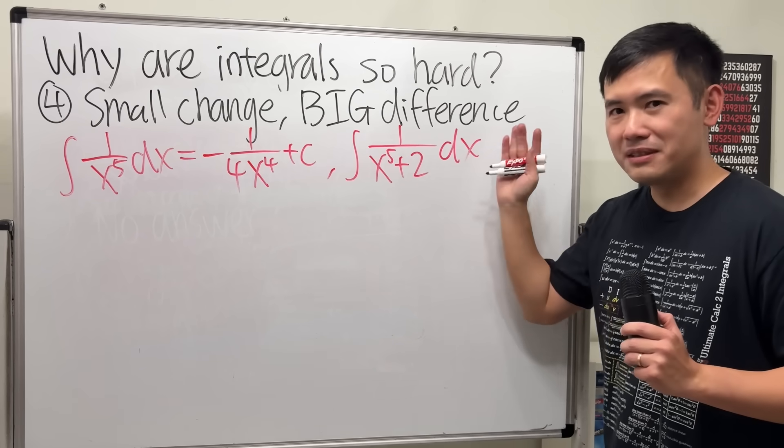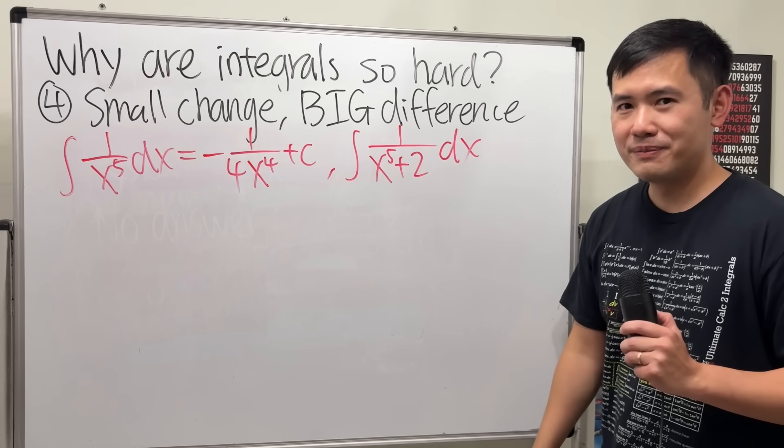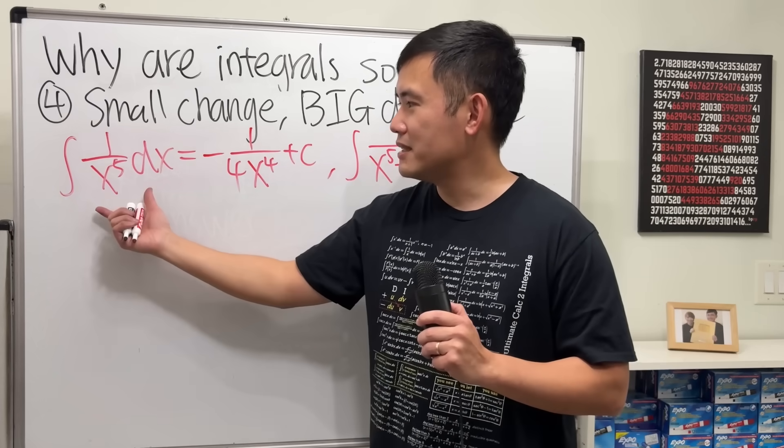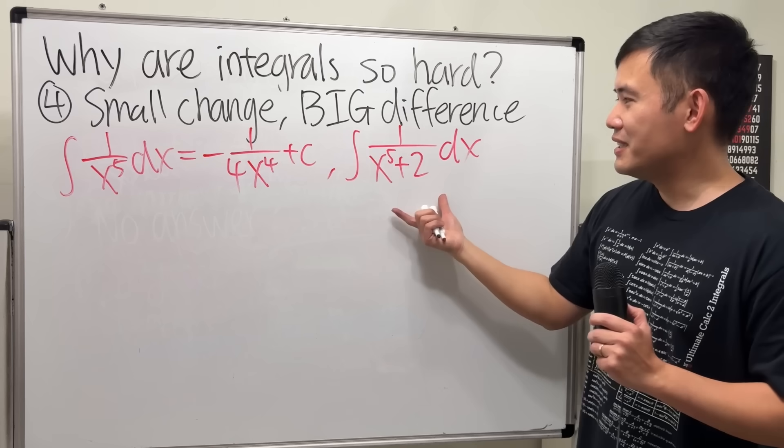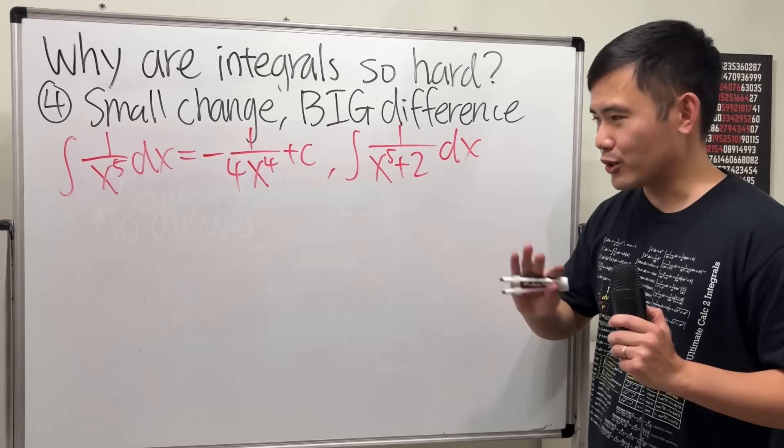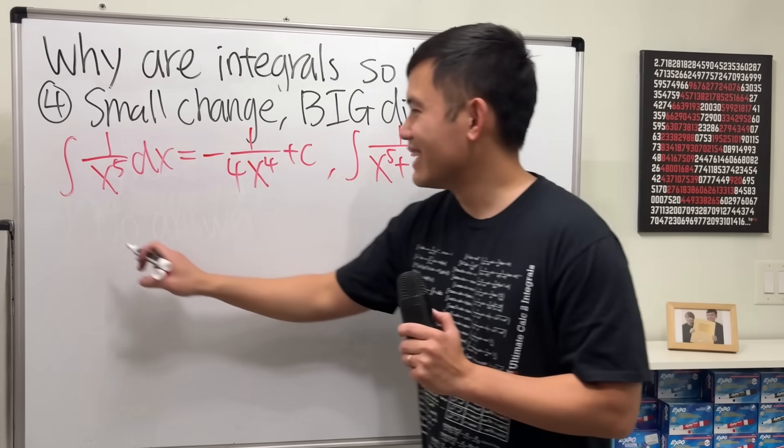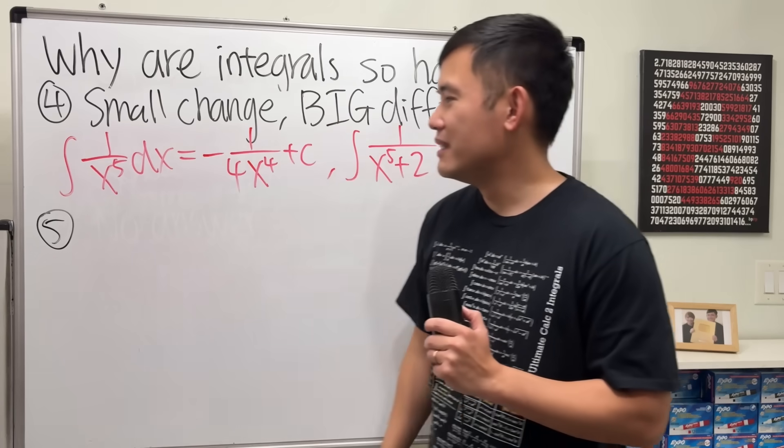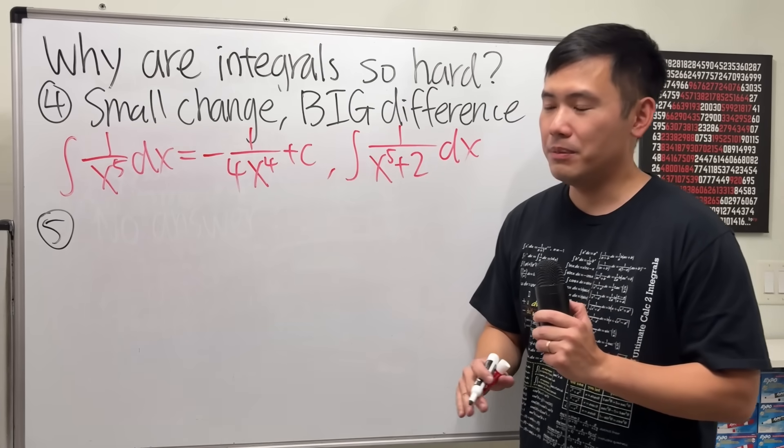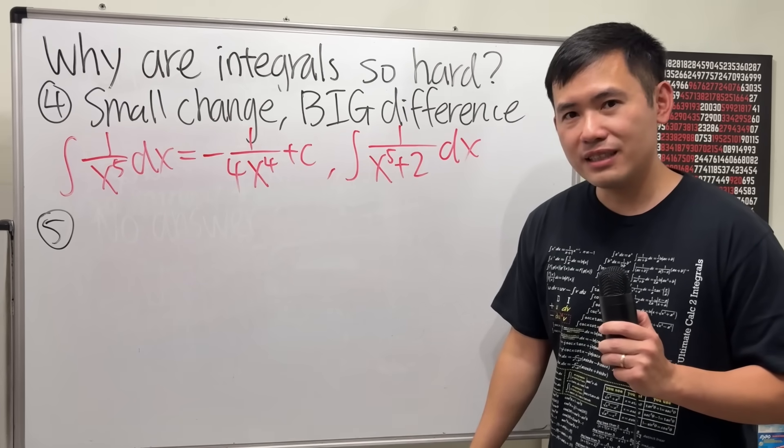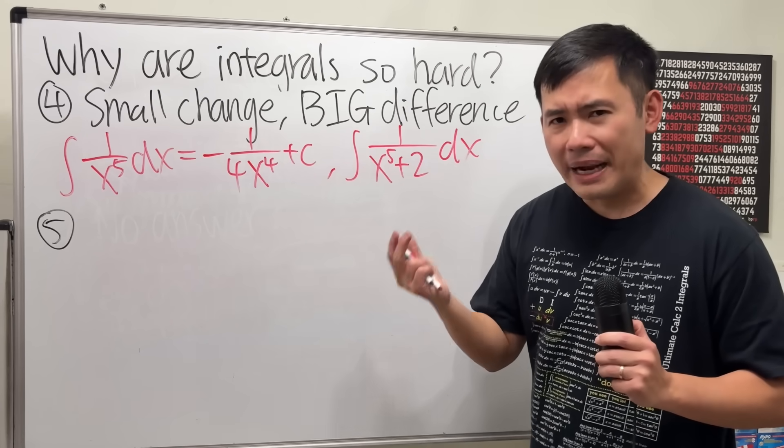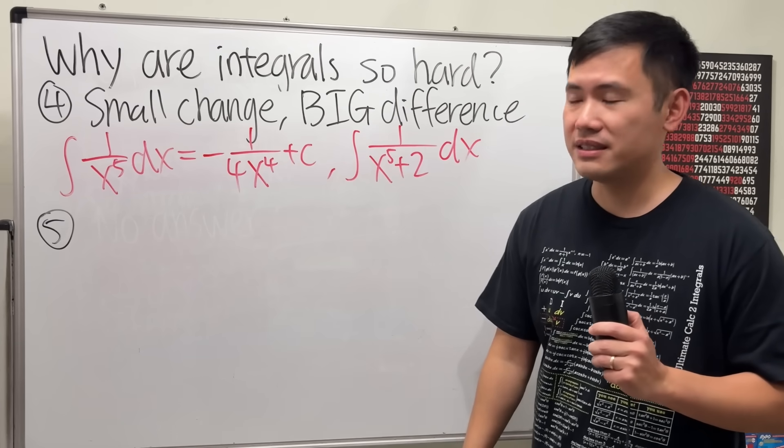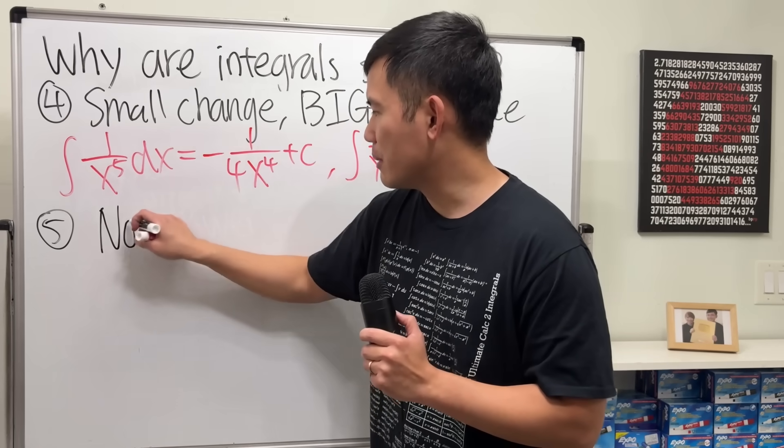This is what I mean by a small change, big difference. And this is dangerous when we do integrals. Imagine your teacher showed you guys this in class as an example, and then puts this on the test. It's not going to be funny at all. Okay, number 5. This right here is the one that's going to make us sad. Because sometimes, when you are trying so hard to solve an integral, the integral might not even have an answer in the first place. So I'll just say, number 5, no answer?